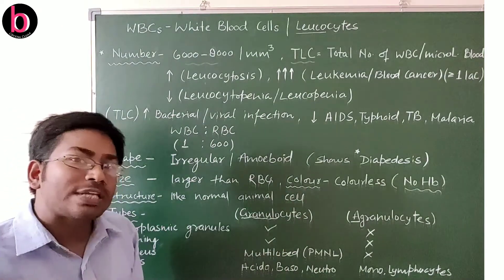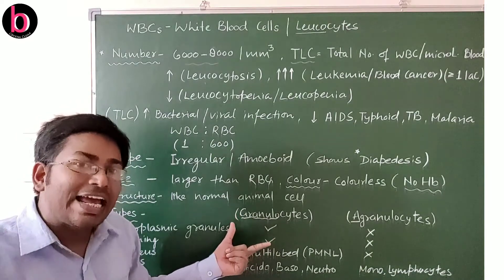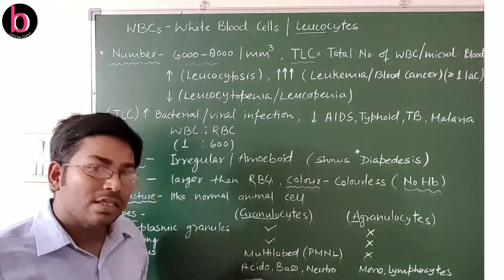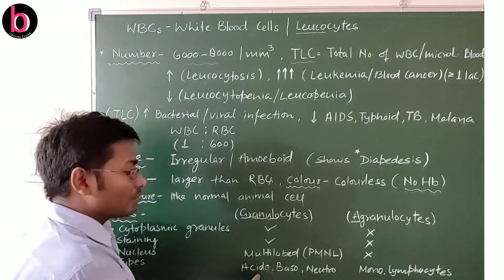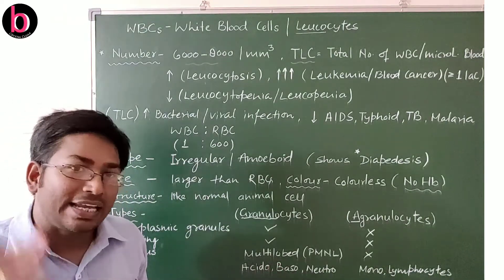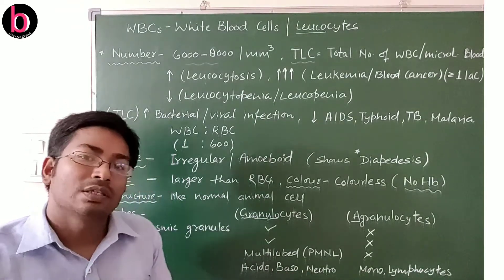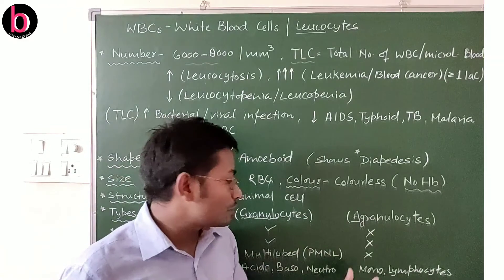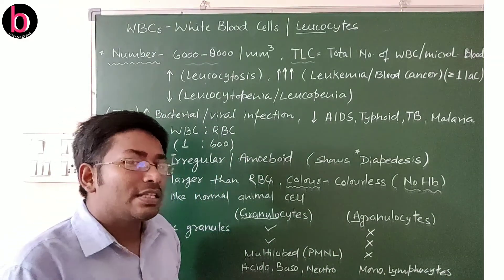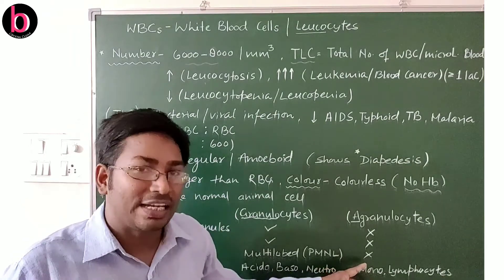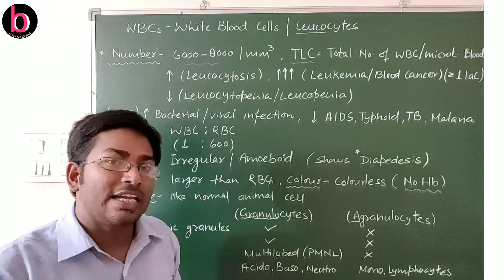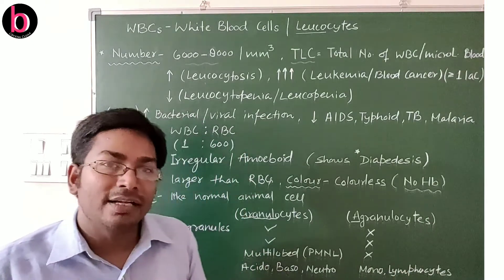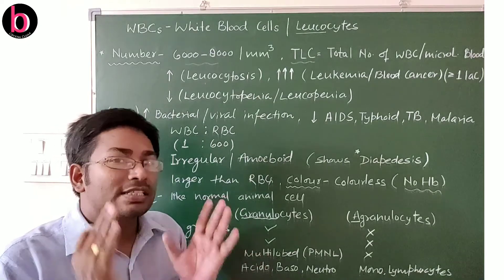Granulocytes are further categorized based on the number of nucleus lobes: acidophils carry two lobes, basophils carry two to three lobes, and neutrophils carry three to five lobes. In agranulocytes, the nucleus is variable in shape but non-lobed. Monocytes have a single kidney or bean-seed shaped nucleus, while in lymphocytes the nucleus is almost spherical and located in the center of the cell.